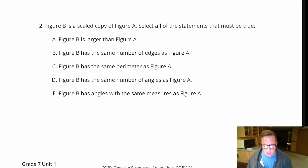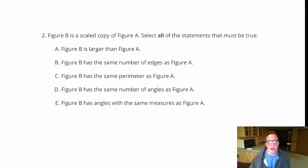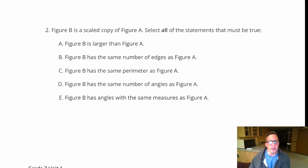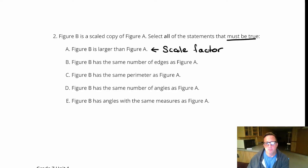For number two: figure B is a scaled copy of figure A. Select all statements that must be true. There's no picture — it's a bit abstract. Statement A says figure B is larger than figure A. We're not positive about this because we don't know the scale factor. It could be smaller or bigger, so we can't be sure.